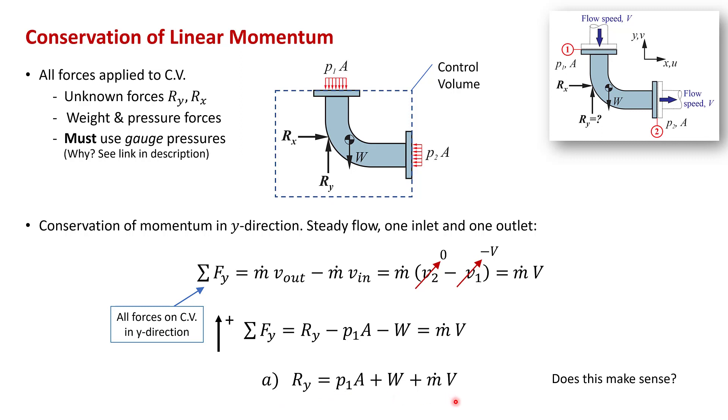Now at this point you should always do a sanity check. Does this make sense? Think about this. If you were holding this elbow in place, p1A acts downwards. So the higher the pressure p1 is, the more positive ry will have to be. So it makes sense that this p1A term is positive. Similarly, the heavier the elbow, which acts downward, the larger and more positive ry will be. So it makes sense that that's a positive W.